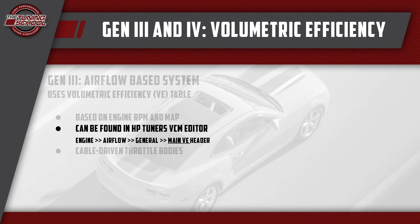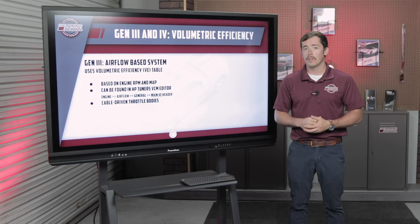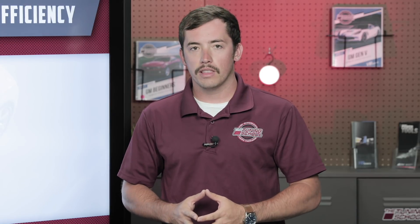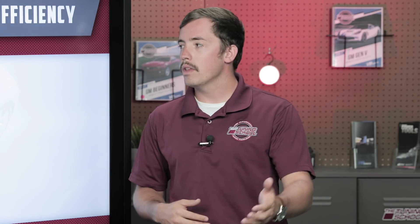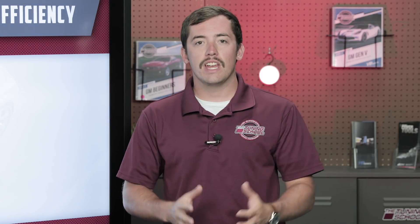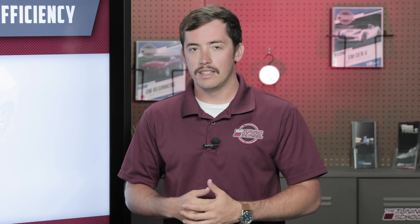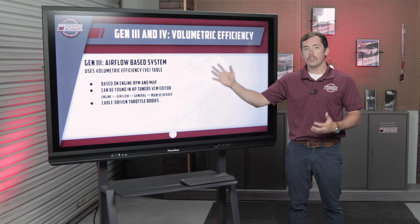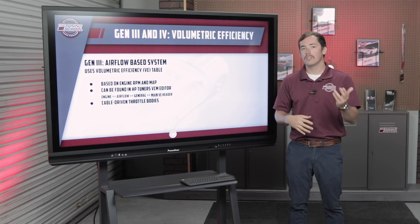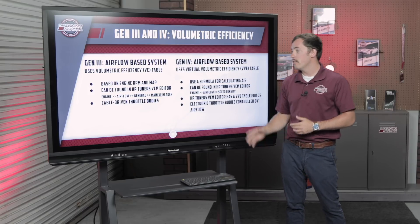The VE table can be found in the HP Tuners editor under Engine, Airflow, General, and your main VE table. Now another distinctive feature of Gen 3 computers is that they are typically cable-driven. That's not a hard rule — Corvettes did come with electronic throttle bodies, and some pickup trucks came with the Hitachi electronic throttle body as well. But normally, Gen 3 ECUs are characterized by a cable-driven throttle body. That changes the way you idle-tune them a lot. As for the years, you're looking at about 1997 and it runs up to about 2006 before we get into the Gen 4s.